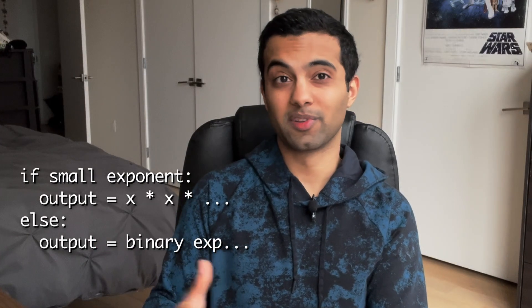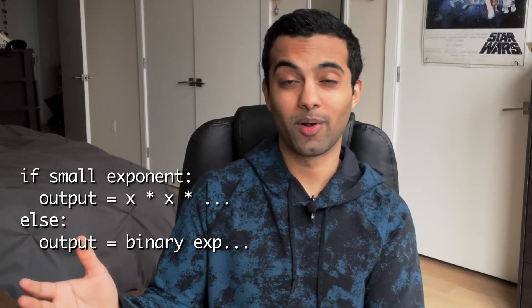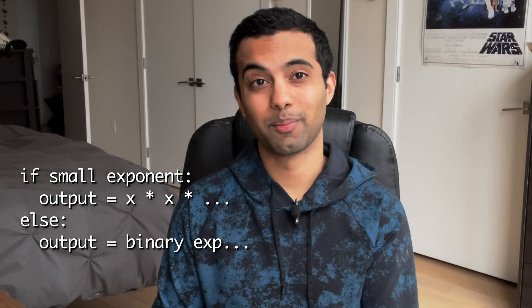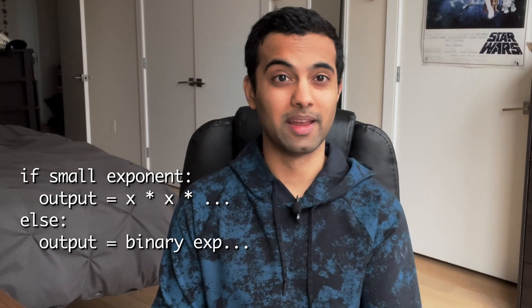But there's actually a pretty simple way to fix this. We could just take a shortcut and multiply out directly if the exponent is small, and only use binary exponentiation when the exponent is large. In fact, this is exactly what the Python core devs did after noticing this behavior themselves.